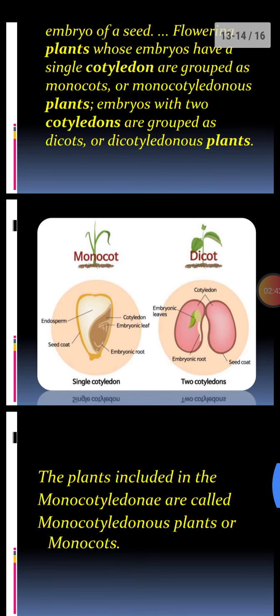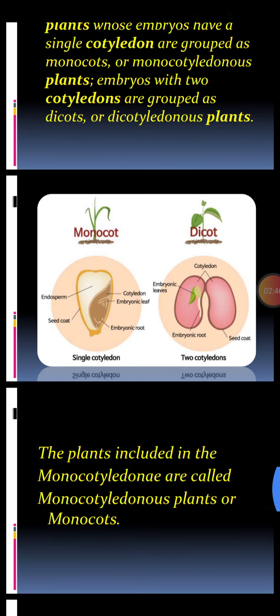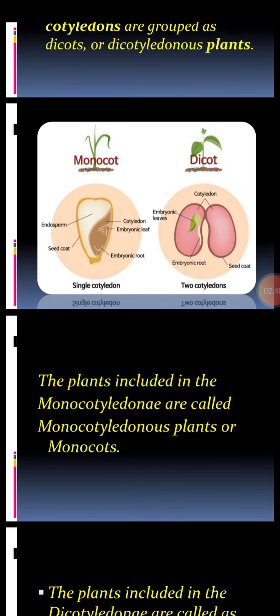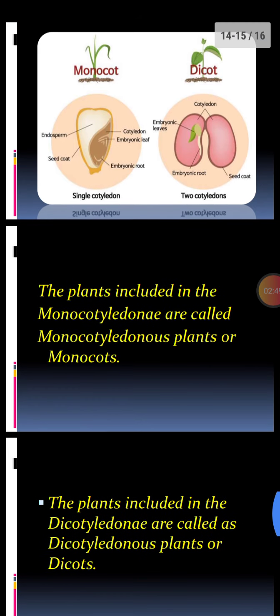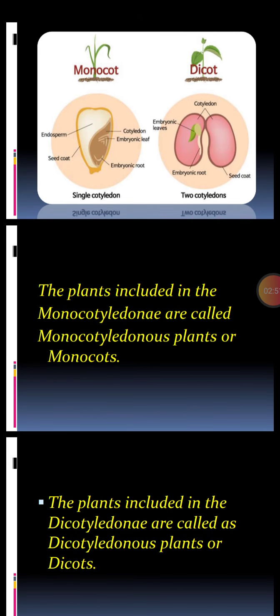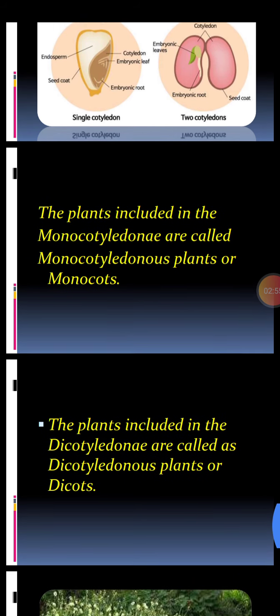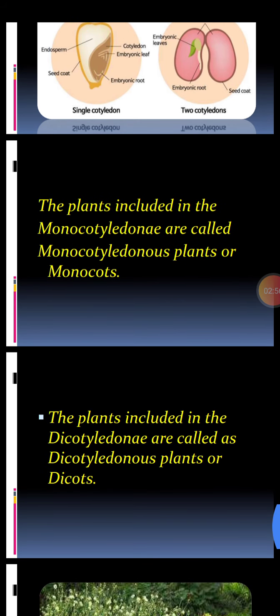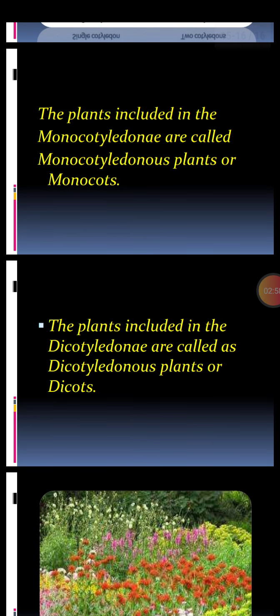A picture shows a single cotyledon in monocots and two cotyledons in dicots. Plants included in Monocotyledoneae are called monocotyledonous plants or monocots, and plants included in Dicotyledoneae are called dicotyledonous plants or dicots.